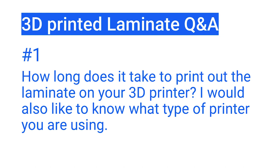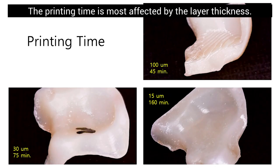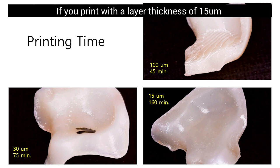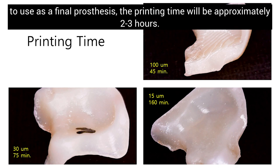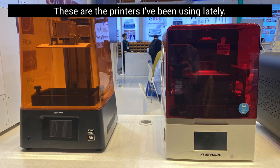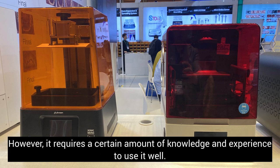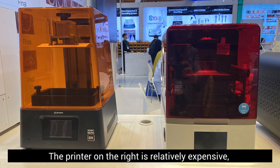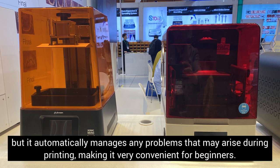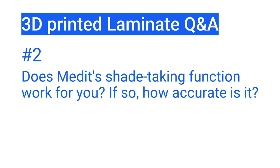Question 1: How long does it take to print out the laminate on your 3D printer, and what type of 3D printer are you using? The printing time is most affected by layer thickness. If you print with a layer thickness of 50 micrometers to use as a final prosthesis, the printing time will be approximately two to three hours. The printer on the left is relatively inexpensive and produces quite good quality output but requires knowledge and experience to use well. The printer on the right is relatively expensive but automatically manages any problems that may arise during printing, making it very convenient for beginners.